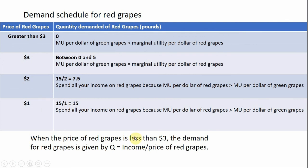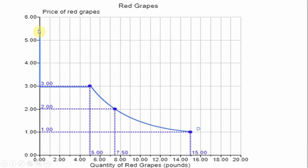Here's the consumer's demand curve for red grapes. The price runs along the vertical axis. Above $3, the curve runs along the vertical axis — quantity demanded is zero. At $3, the consumer could buy zero units or spend all $15 on red grapes, affording 5 pounds. Below $3, the curve has a negative slope as the consumer spends the entire budget on red grapes: at $2 that's 7.5 pounds, and at $1 that's 15 pounds. That's how you derive a demand curve from a utility function displaying perfect substitutes.